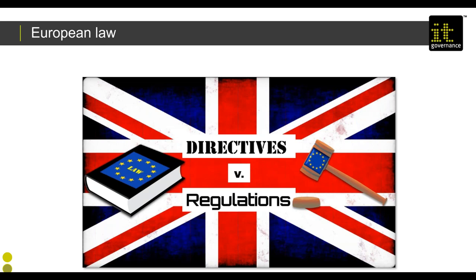How do we get to this position? Leading from the European Council, EU law covers directives and regulations. Directives require enabling legislation in the member state — for instance, the European Data Protection Directive of 1995 found its way into UK legislation as the Data Protection Act 1998. Regulations are different; they don't require enabling legislation and are applied in all member states on a given date. The GDPR, the General Data Protection Regulation, is exactly that — it's a regulation.